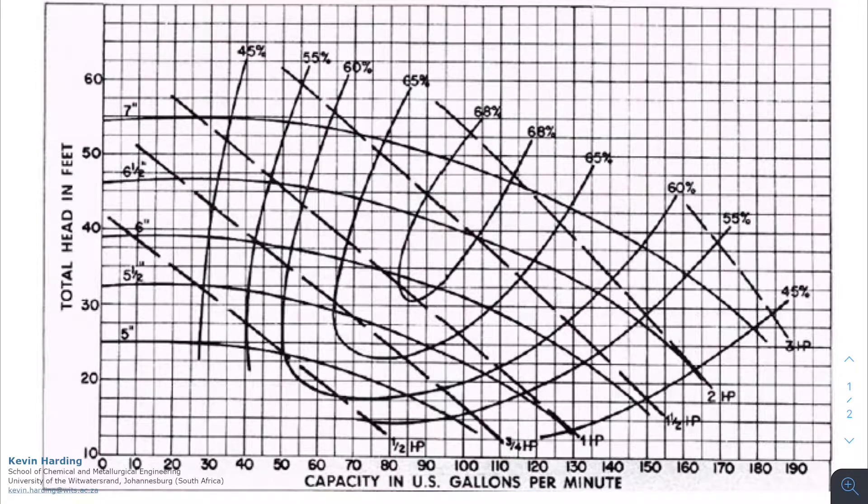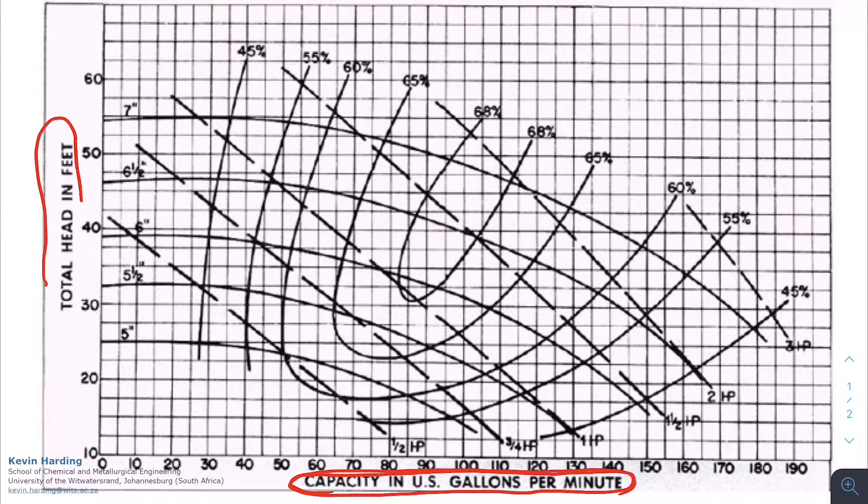When we work with pumps we're going to need a pump curve. In front of us is a pump curve or manufacturer's curve as supplied by a manufacturer. This is giving us the capacity, in this example in gallons per minute, so that is a volumetric flow rate, and it's giving us the total head in feet.